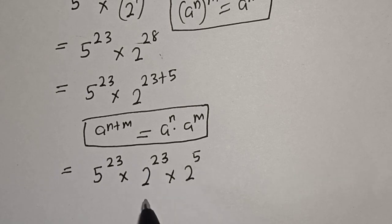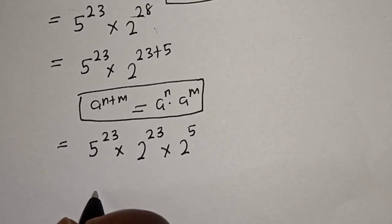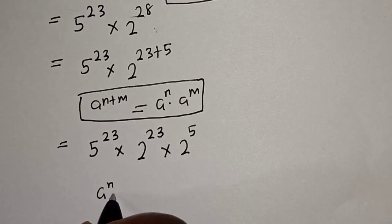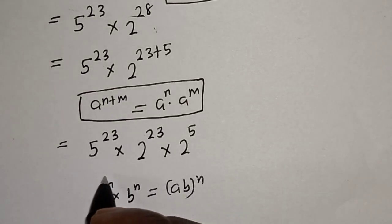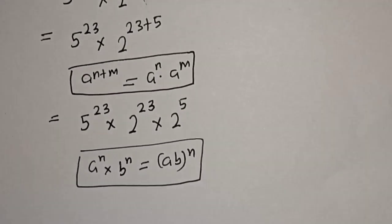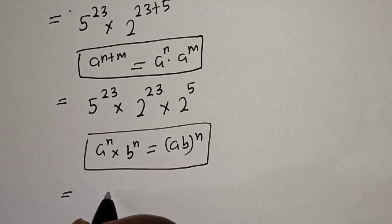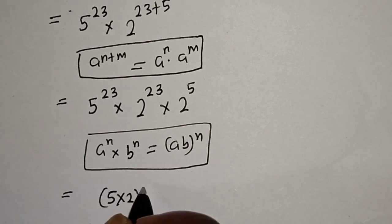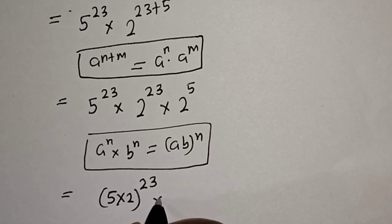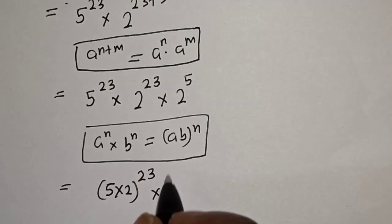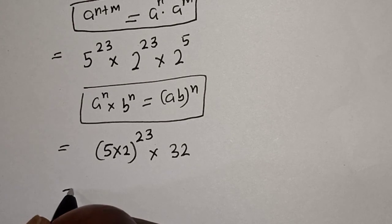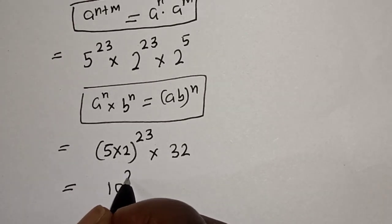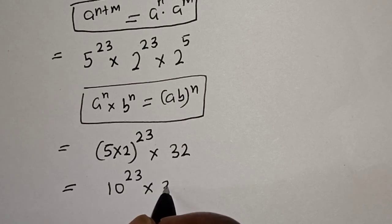Here we have the same power 23 and 23. Take note of this rule: a raised to power n times b raised to power n is equal to a times b, all raised to power n. So 5 raised to power 23 times 2 raised to power 23 equals 10 raised to power 23. Then this is equal to 10 raised to power 23 multiplied by 32.